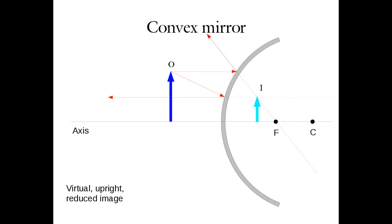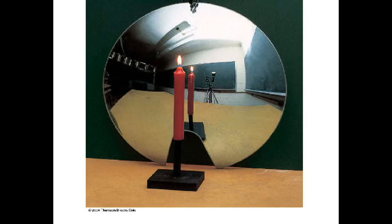Here's an excellent example: flip that concave reflector around and you have a convex reflector. No matter the distance of the object from the mirror, all images are virtual, upright, and reduced. The camera in the picture appears much smaller than in reality; the blackboards look far tinier than the actual blackboards; the candle is reduced in size. It's all upright and all appears to be located on the other side of the mirror surface — virtual, upright, and reduced.